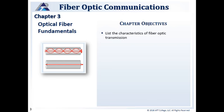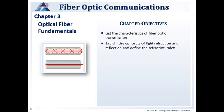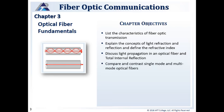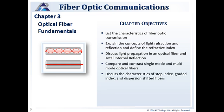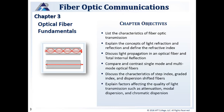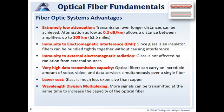Our chapter objectives will list the characteristics of fiber optic transmission, explain the concepts of light refraction and reflection and define the refractive index, discuss light propagation in an optical fiber and total internal reflection, compare and contrast single-mode and multi-mode optical fibers, discuss the characteristics of step-index, graded index, and dispersion shifted fibers, explain the factors affecting the quality of light transmission such as attenuation, modal dispersion, and chromatic dispersion, as well as explain the use of mode conditioners.